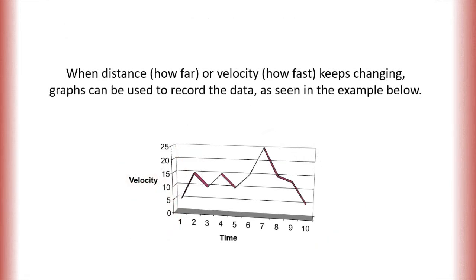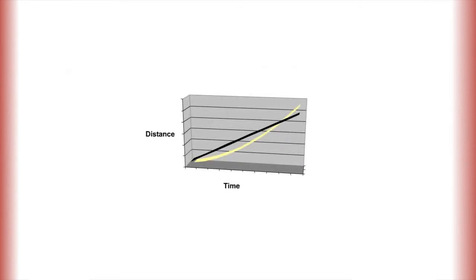When distance or velocity keeps changing, graphs can be used to record the data, as seen in the example below. Here we show the data graph for the distance, velocity, and acceleration of the two trucks shown earlier. Use your observations to select which line represents which truck in each graph.